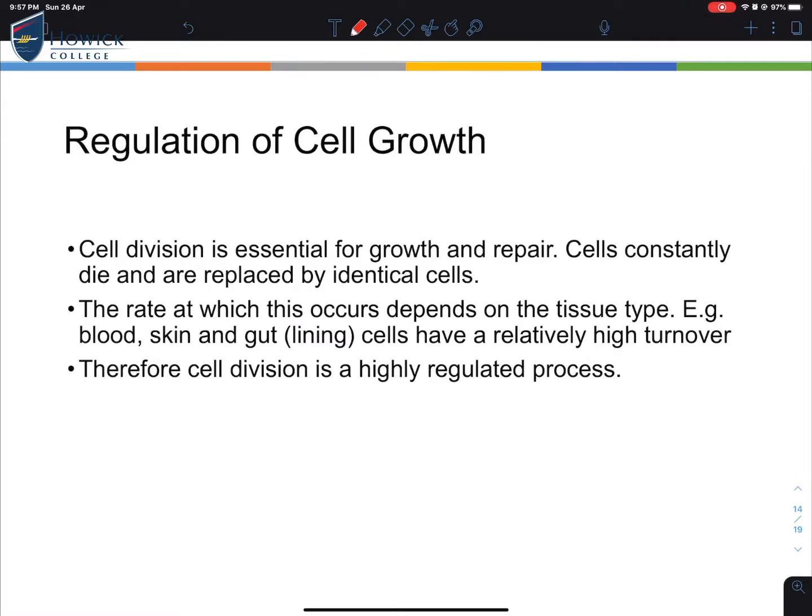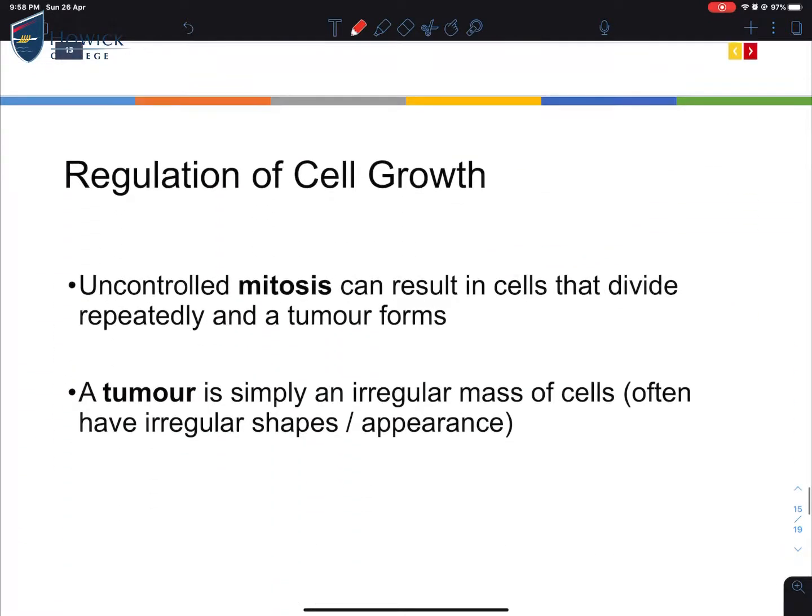This process is a highly regulated process because your body has multiple checkpoints to allow cells to divide or not to divide. If you have uncontrolled mitosis or meiosis, then you're basically producing tumor. These tumors could be benign, they form a little lump but don't really grow anymore. You could also have carcinogenic ones that are very invasive. They will keep on growing and replicating without your body saying yes.